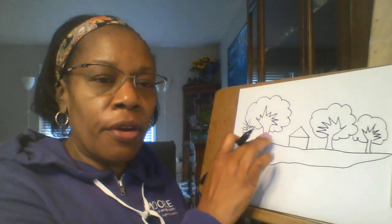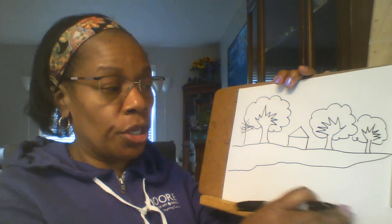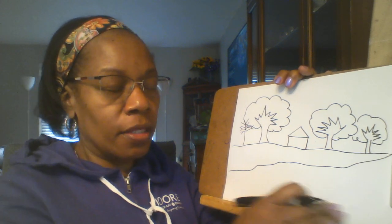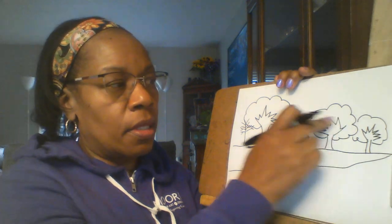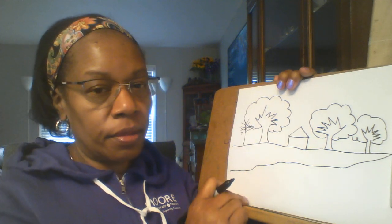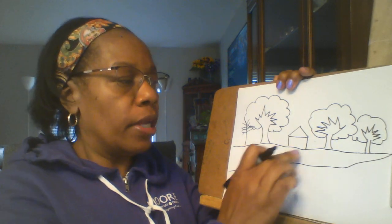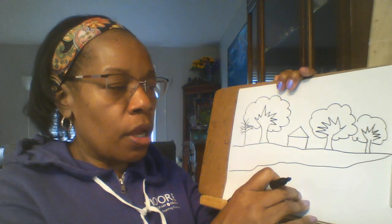So we've got our trees in the background. Now the background is the furthest away from you, and in landscape drawings the background is closer to the top of the page. The part that you would see closer would be at the bottom of the page — this is the foreground. What do you think the piece in the middle is called? Background is in the back, foreground is in the front, and in the middle would be the middle ground. So we've worked on the background and we're going to work on the foreground.